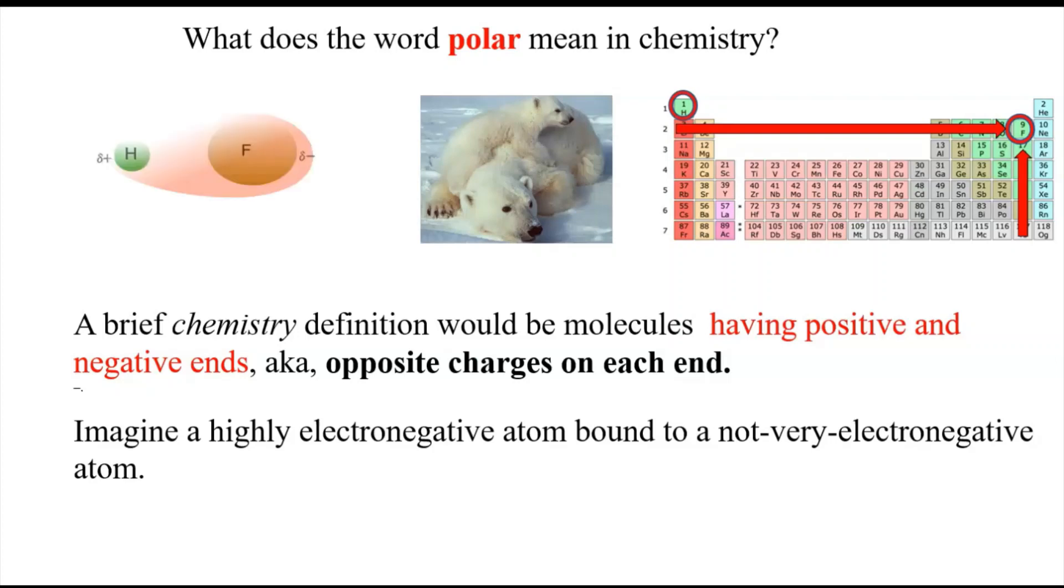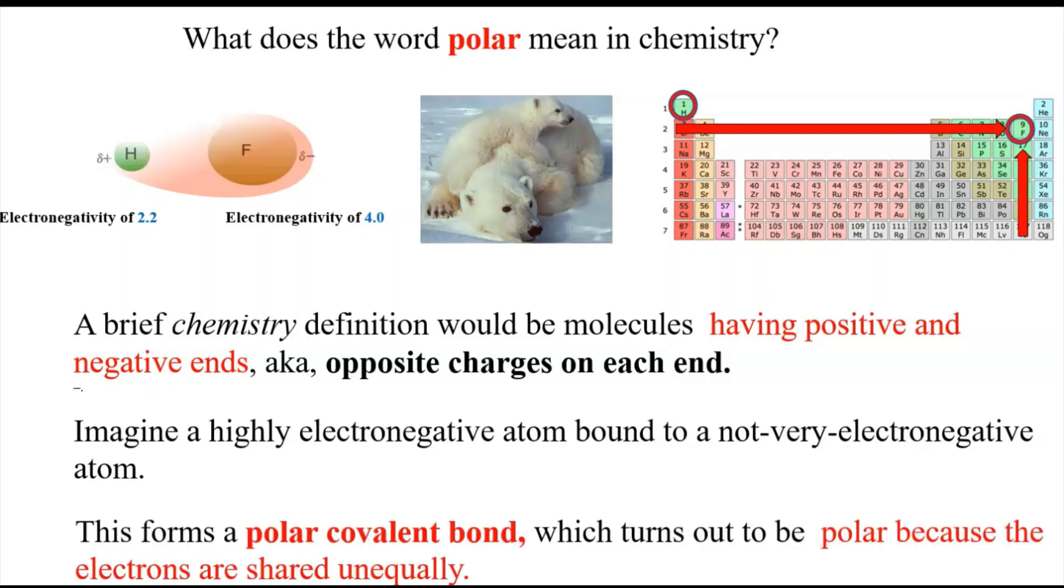We see a diagram of hydrogen fluoride, more commonly called hydrofluoric acid, where the fluorine is pulling the electrons over on its side and pulling them away from the hydrogen. That's because the electronegativity of the fluorine is really high and of the hydrogen not so much. So what happens is it forms a polar covalent bond, which turns out to be polar because the electrons are shared unequally. That is, the fluorine gets the hog share of the electrons.